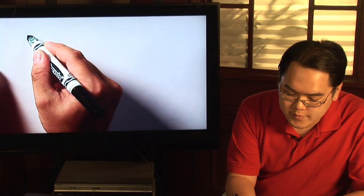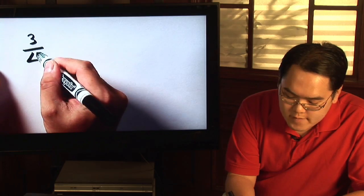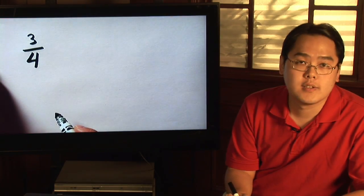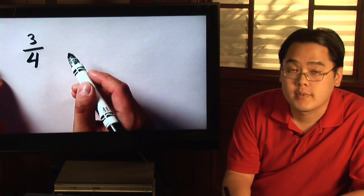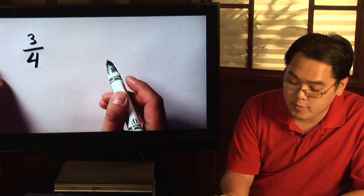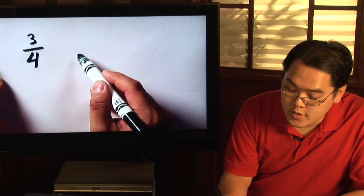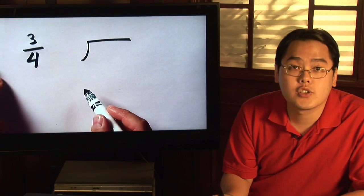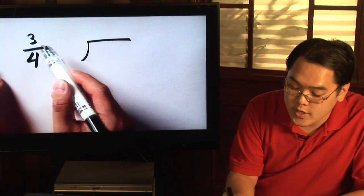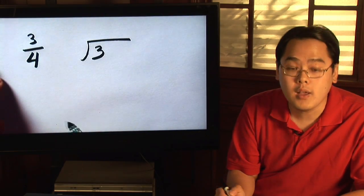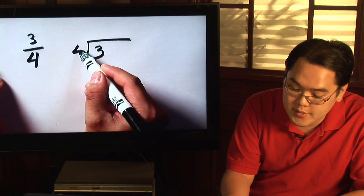Suppose you want to find out what 3 fourths is as a decimal. Well like I said earlier, it's a long division problem. What you do is set up the long division structure. Now the numerator is always going to go inside and the denominator is always going to go on the outside.